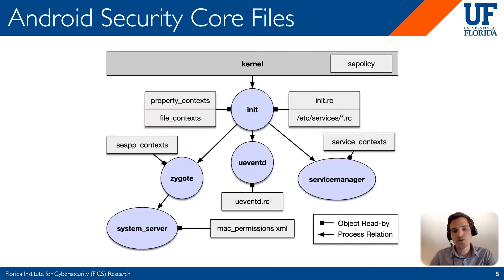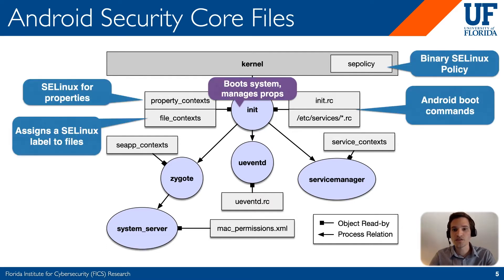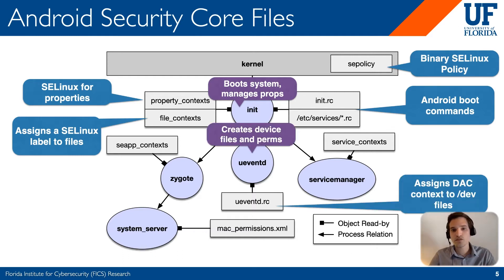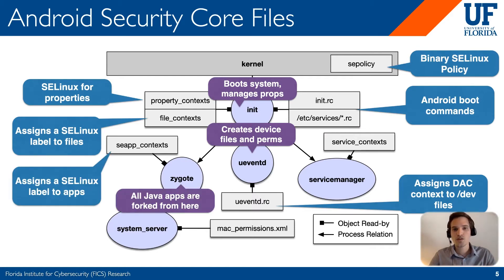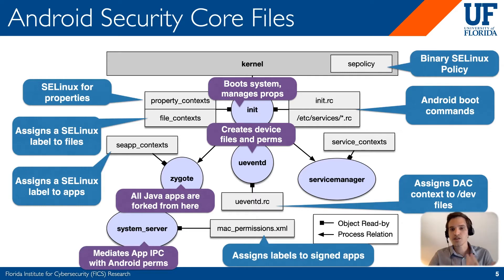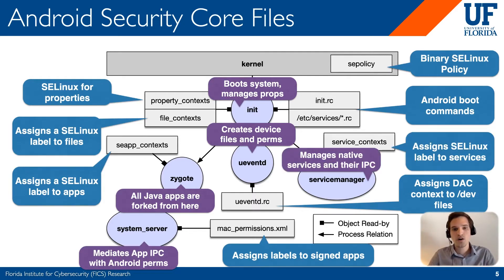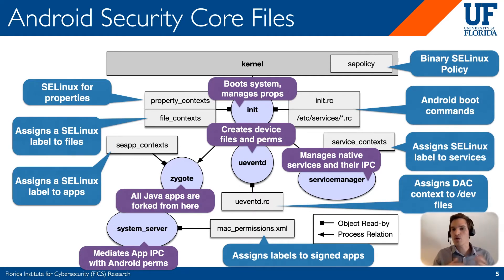The security policies for Android are spread out all over the entire system — on labels on files, within files, and within processes. The init process is responsible for loading the MAC policy into the kernel, booting up the system, and maintaining security for properties and other files. Its subprocesses, one of which is ueventd, assign DAC policies to /dev files, and also spawn Zygote, which manages all the applications on the system, which further spawns system server and service manager, which manages native daemons. So all these together are a big part of Android security policy.